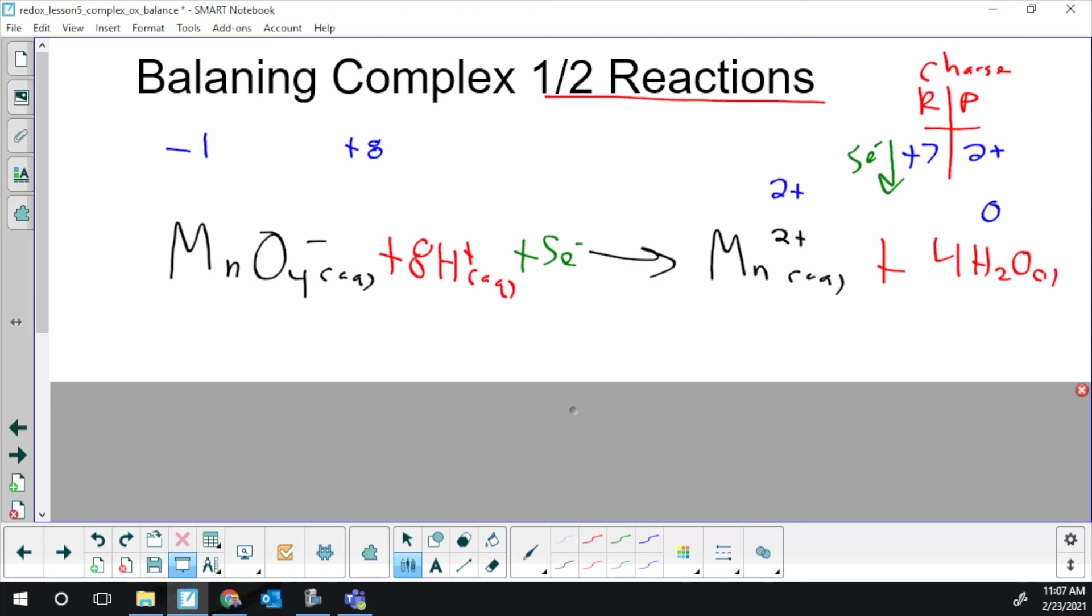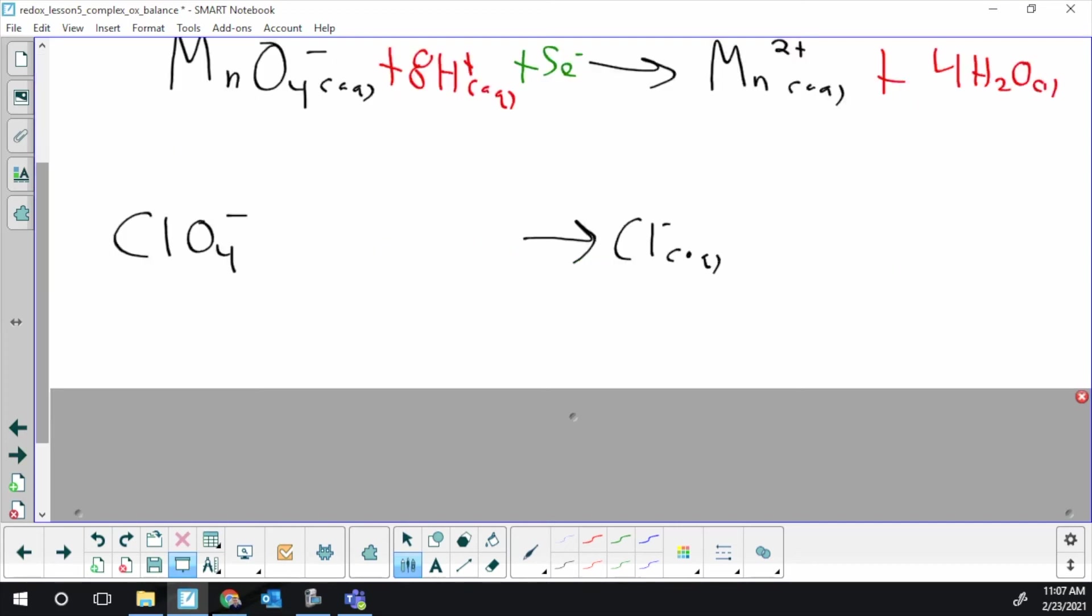So perchlorate becoming chloride. We start with balancing atoms other than O and H—that's Cl—and that's one and one, so that's good. Then we balance oxygen with water: four water again.